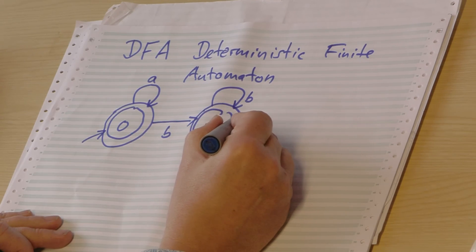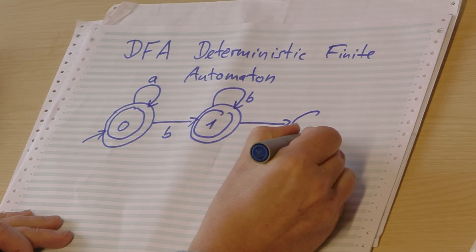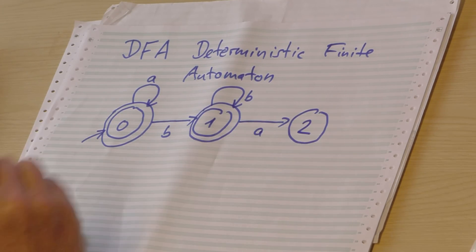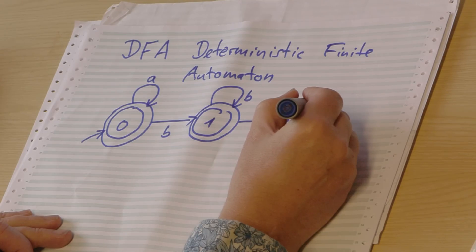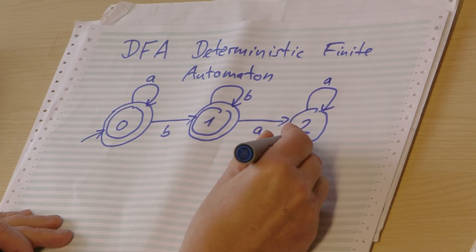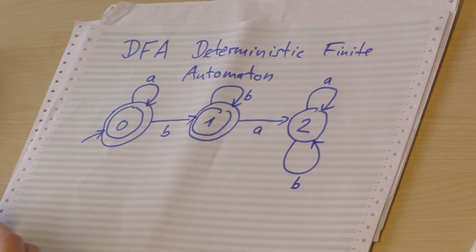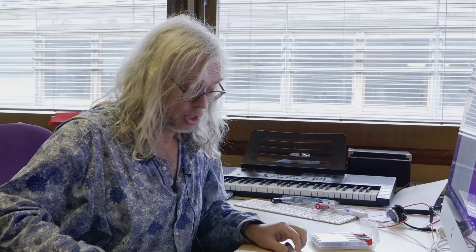But it could happen I see an a, in which case I'm unhappy, so I go into state two, which is not a final state. It's my error state. And now I can have a transition - for a, I stay in my unhappy state. For b, I also stay in my unhappy state.